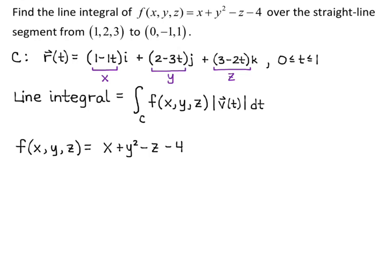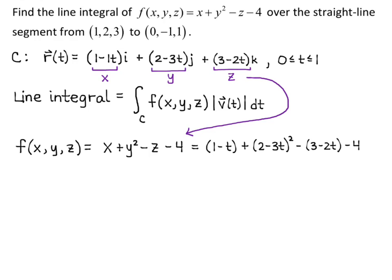Substituting in: x = 1 − t gives (1 − t); y = 2 − 3t gives +(2 − 3t)²; z = 3 − 2t gives −(3 − 2t) − 4. Expanding: (1 − t) + (4 − 12t + 9t²) − 3 + 2t − 4. Combining like terms gives 9t² − 11t − 2. So over the curve C, f is equivalent to 9t² − 11t − 2.